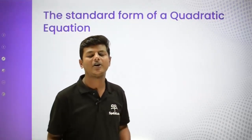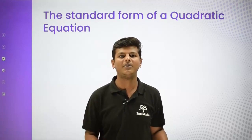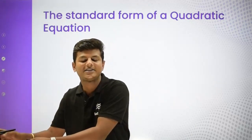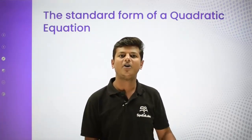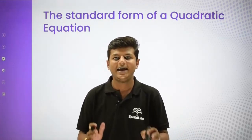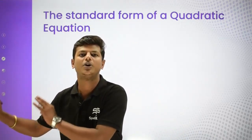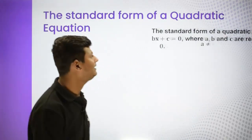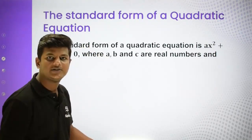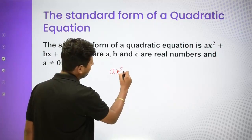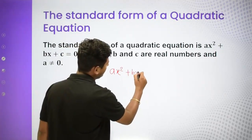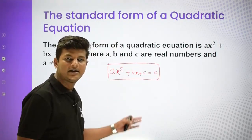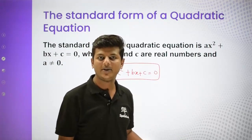The standard form of a quadratic equation — if we write it based on equations — we keep x², x to the power 1, and x to the power 0. So the standard form of a quadratic equation is: ax² + bx + c = 0. I repeat: ax² + bx + c = 0. Because it is an equation, we set it equal to zero.